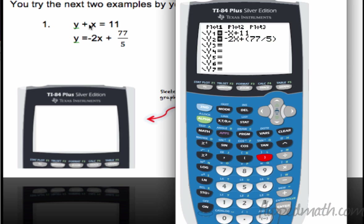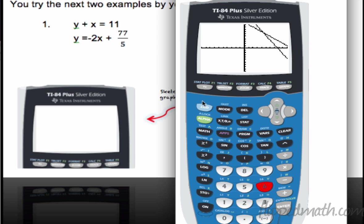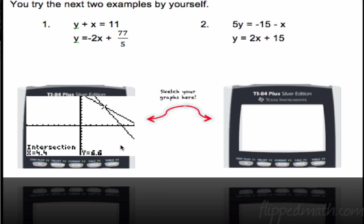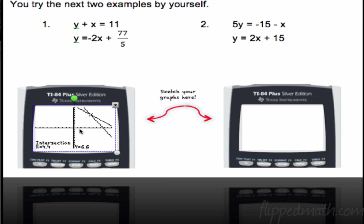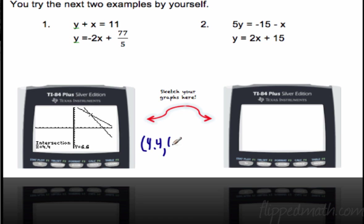Did you solve the first equation for y? You subtract x from each side — that gives you negative x plus 11. So in Y1, enter negative x plus 11. For the second equation, type it in as is, using parentheses around the fraction. Hit Zoom 6. There's the intersection on screen. Second, Calculate, choice 5, hit Enter 3 times, and there's our solution: x is 4.4 and y is 6.6, so we write our solution as (4.4, 6.6). Plugging in: 4.4 plus 6.6 equals 11 — it checks out.